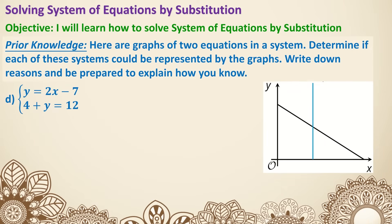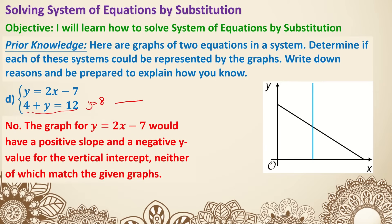D: y equals 2x minus 7, and 4 plus y equals 12, so this one is y equals 8 — a horizontal line. There's no way this could represent that. And the other case is 2x has a positive slope, so it goes up, and negative 7 means it goes up from below the y-axis. So D does not work.